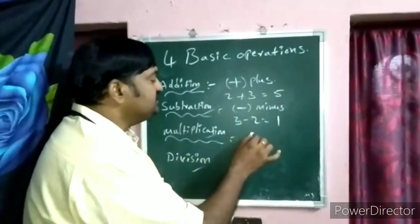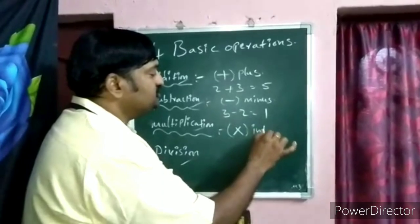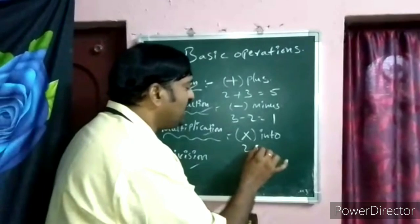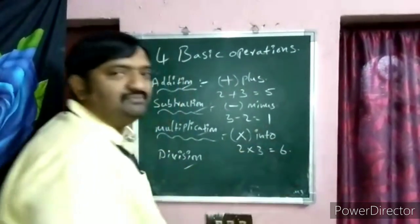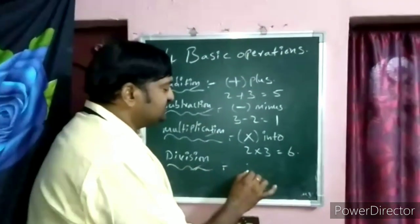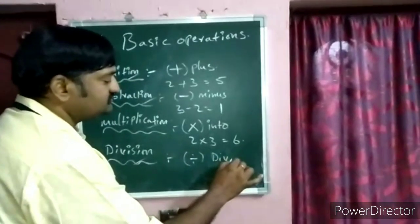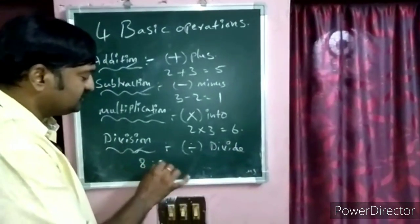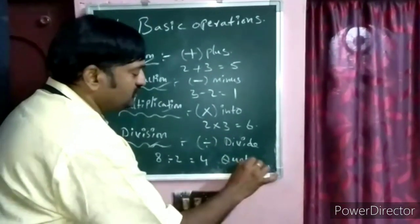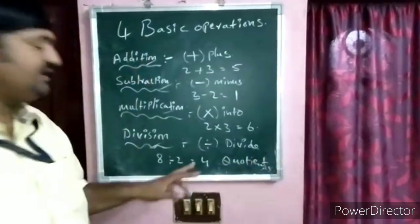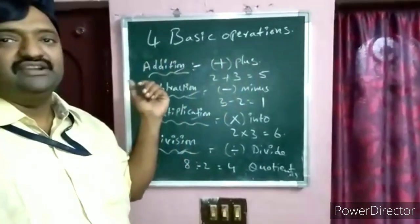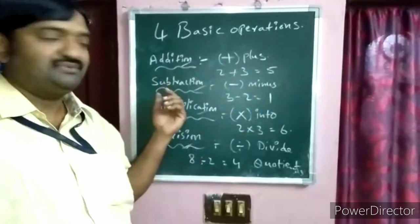Multiplication — the symbol is 'into'. The product of any two digits is multiplication. For example: two into three equals six. Next is division — the symbol is divide. The result of dividing any two digits is called the quotient, and that operation is division.